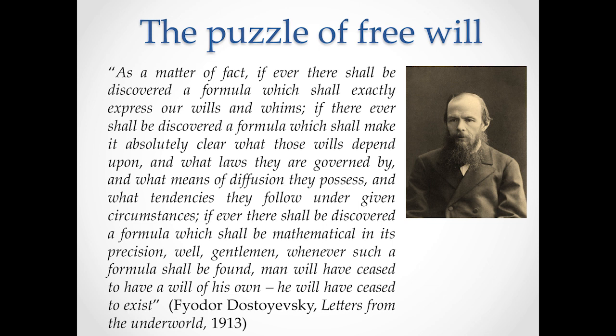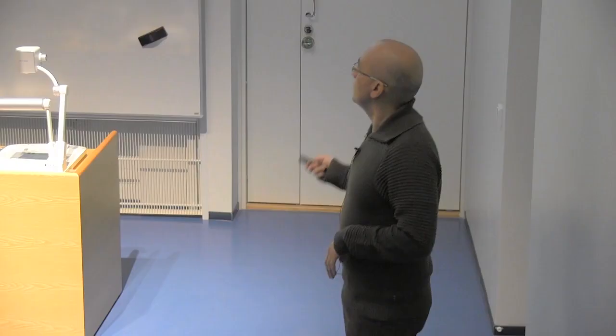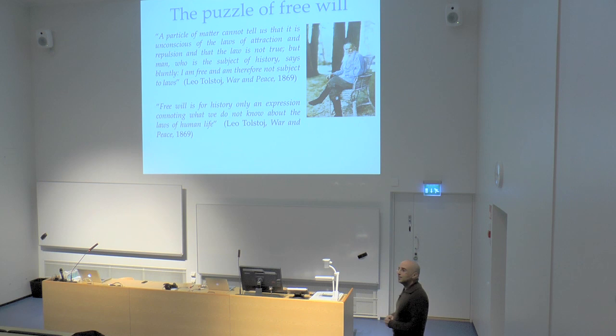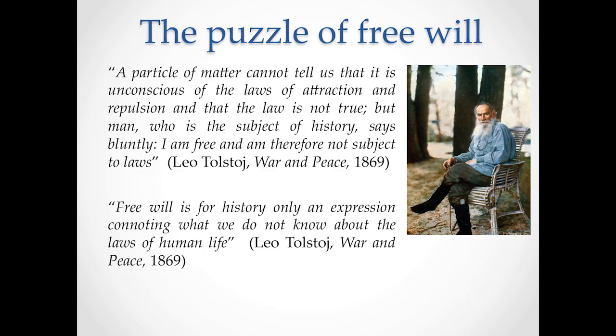Dostoyevsky wrote: 'If ever there shall be discovered a formula which shall exactly express our wills and whims, if ever there shall be discovered a formula which shall be mathematical in its precision — well, gentlemen, whenever such a formula shall be found, man will have ceased to have a will of his own; he will have ceased to exist.' Leo Tolstoy was a little more possibilistic, saying that at the end we still ignore many things about nature — maybe we just have the impression of acting freely but we're not really able to see this from the inside. 'Free will is for history only an expression connoting what we do not know about the laws of human life.'